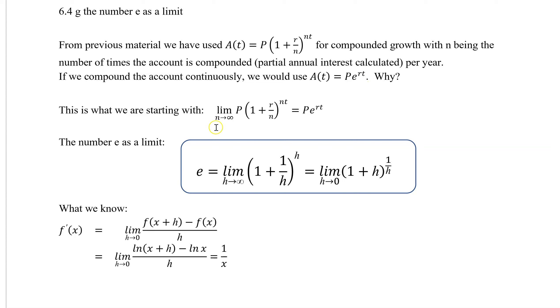So what's happening here is the limit as our compounding approaches infinity because it's continuous, so the number of times it's compounded per year is infinite, basically. And then we end up with this, which gives us this. So what we're going to show today is why this does become this.